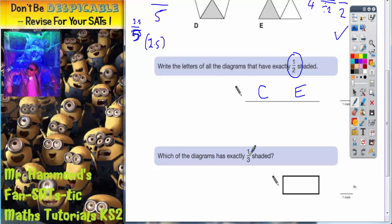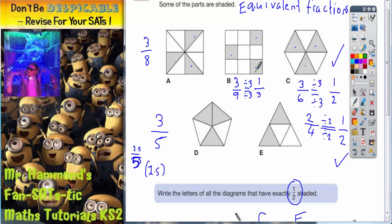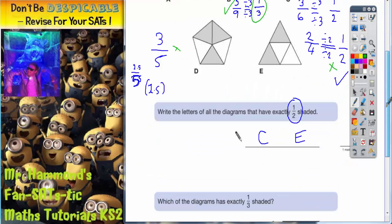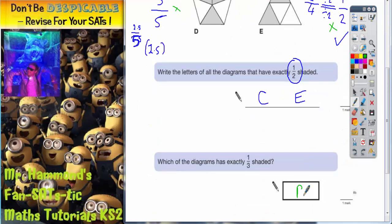There's a second part of this question. Which of the diagrams has exactly 1 third shaded? Well if you look back you can see that we've already worked this out. We showed that 3 out of 9 does simplify to be 1 third. So shape B works for the second part of the question. And that's the only one. Because this is 3 eighths so that doesn't work. This is a half. This is 3 fifths. And this is a half. So the only one that works is shape B. So shape B is the one that we need to write in there.